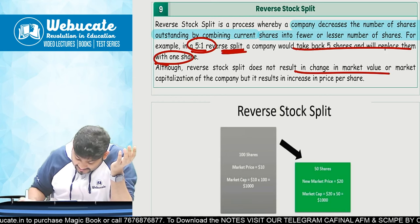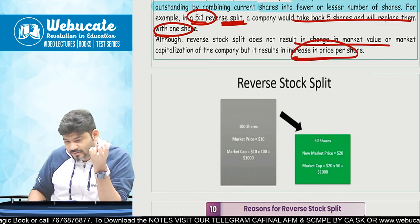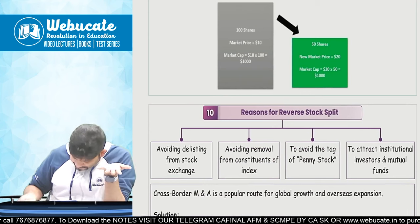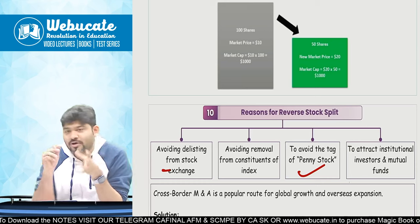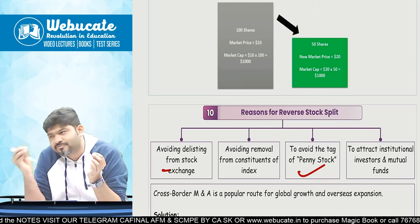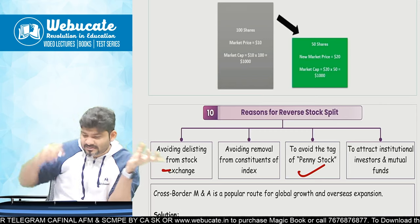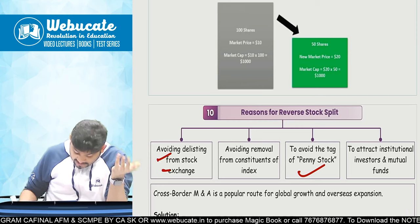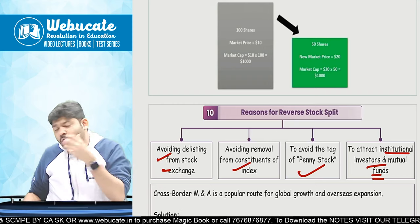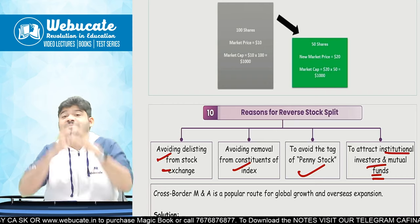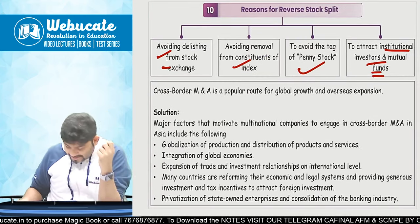Reverse split will not result in a change in market value, but it results in an increase in share price. Companies may do this to avoid the tag of penny stock, avoid delisting from the stock exchange — if a stock is at 3-4 rupees SEBI may want to delist it — or to avoid removal from index constituents, and to attract institutional investors and mutual funds who want to invest in companies with higher share prices.